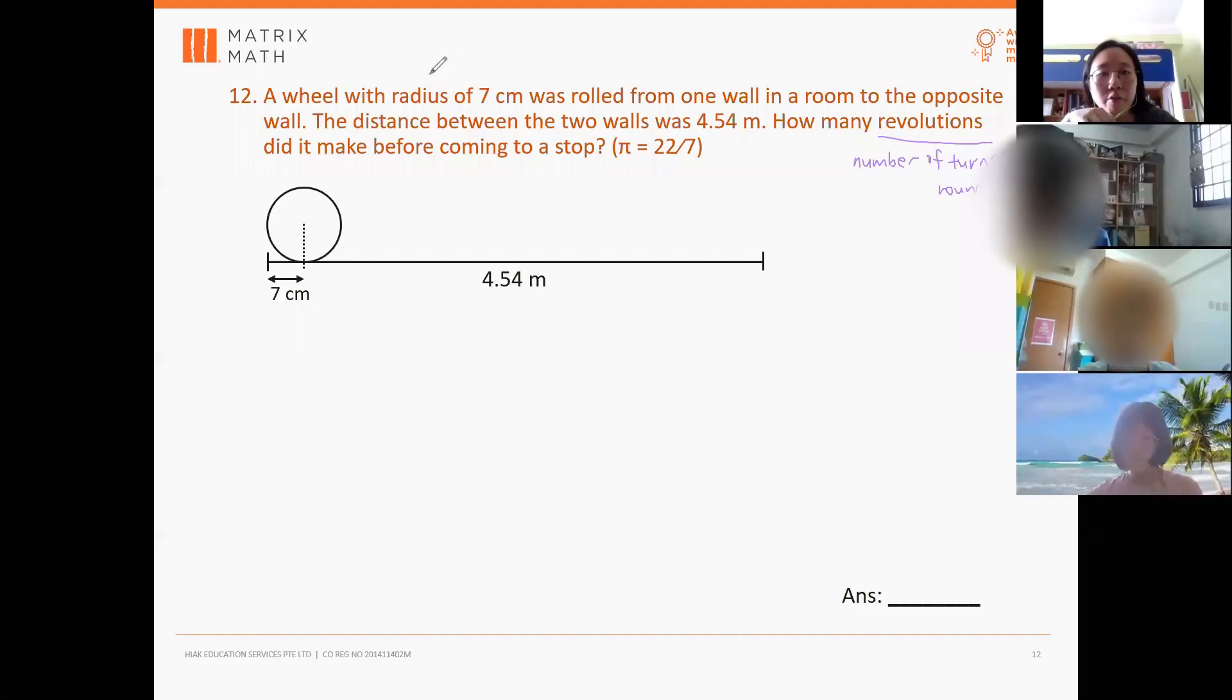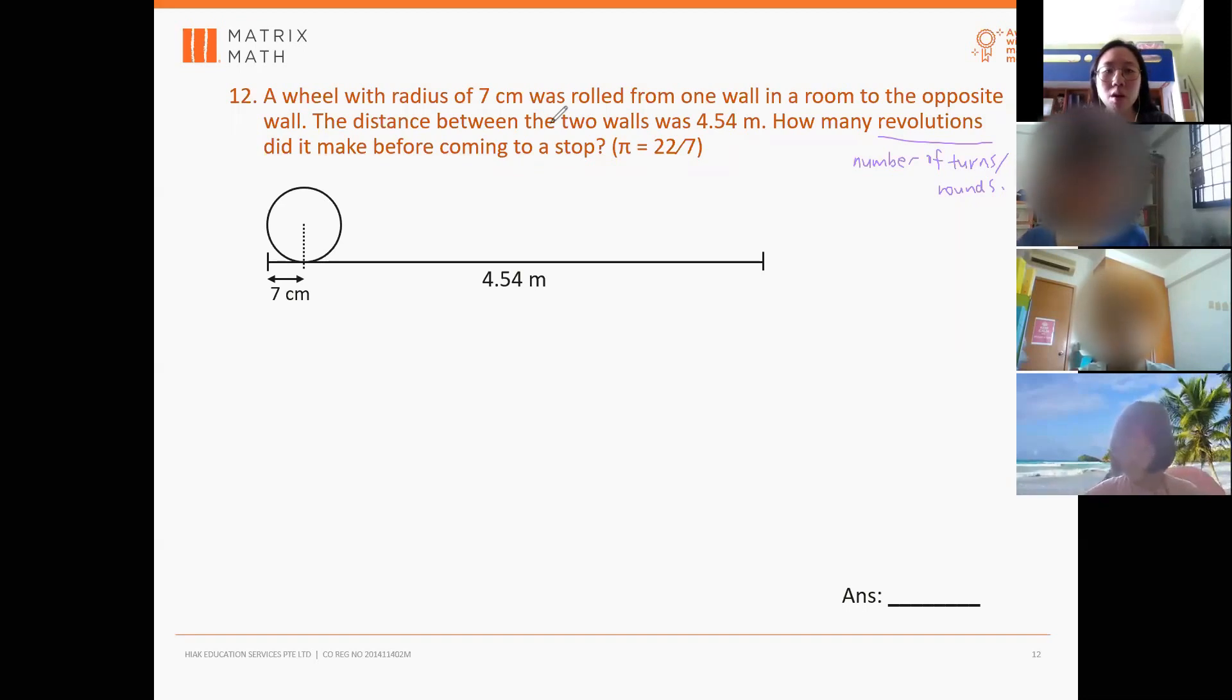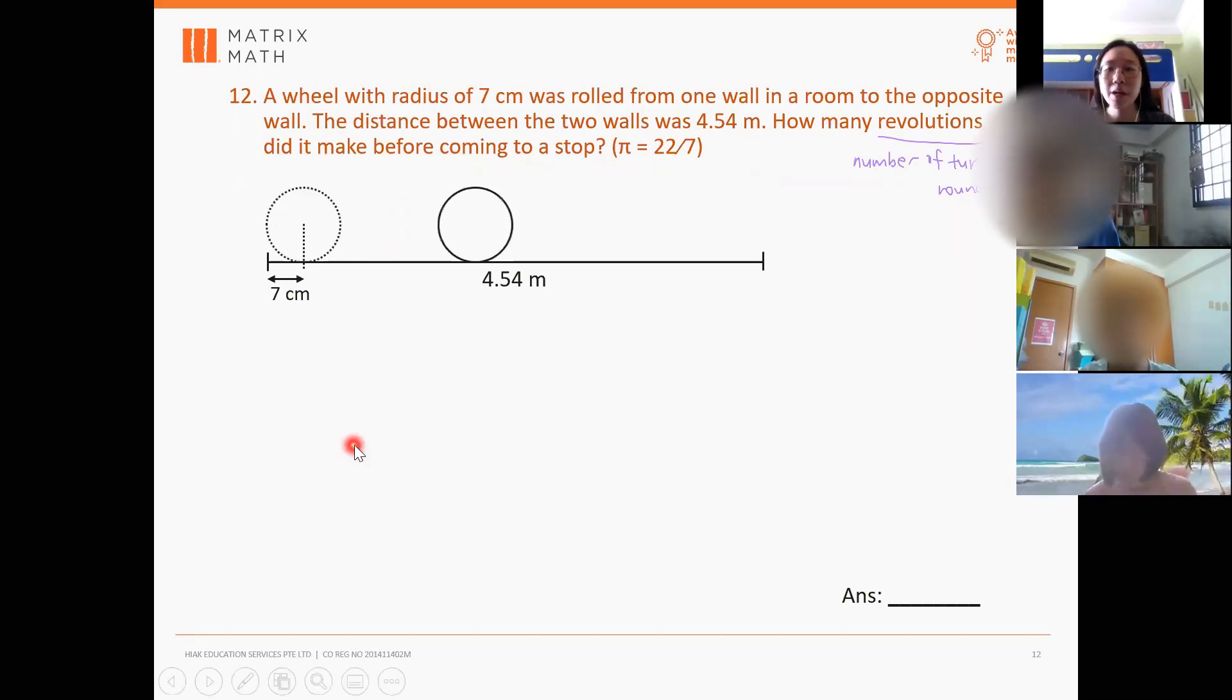Okay, so let's go through this together. So a wheel with radius of 7 cm was rolled from one wall to the opposite wall. Okay, so this wheel is going to roll this way, and then it's going to hit the wall here, and then it's going to stop.